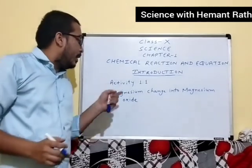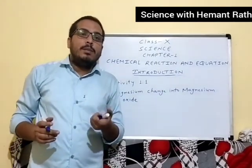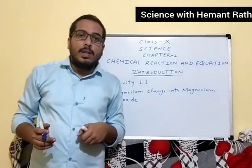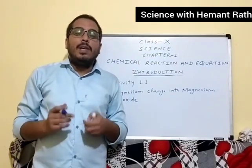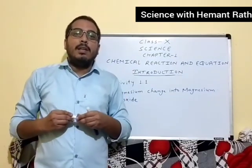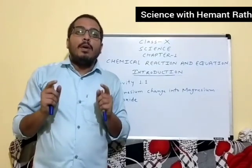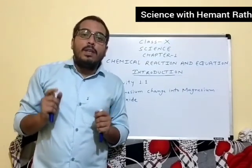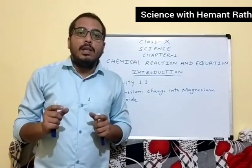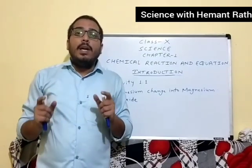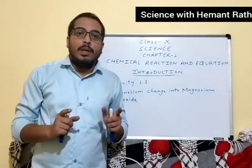Our first activity is magnesium changing into magnesium oxide. In this activity, we will take a magnesium ribbon and clean it with the help of sandpaper. After cleaning the magnesium ribbon, when we burn it, we will see the pink color magnesium ribbon turn into white color powder.